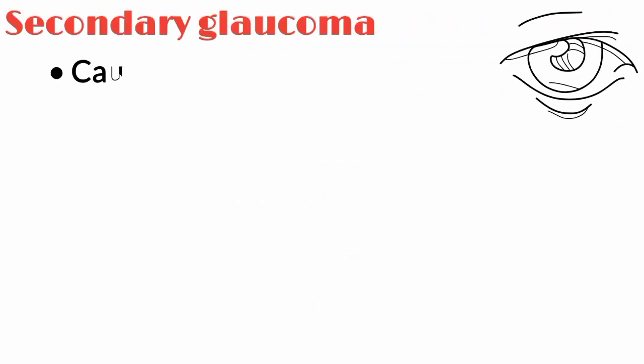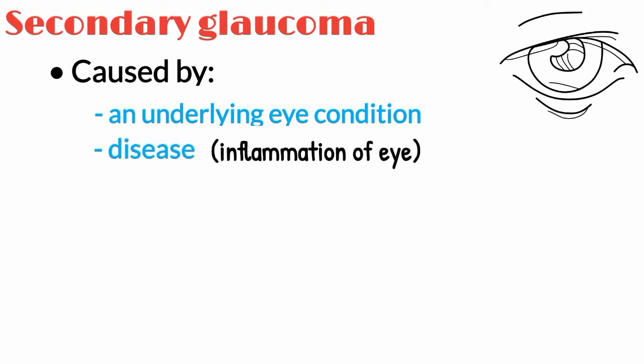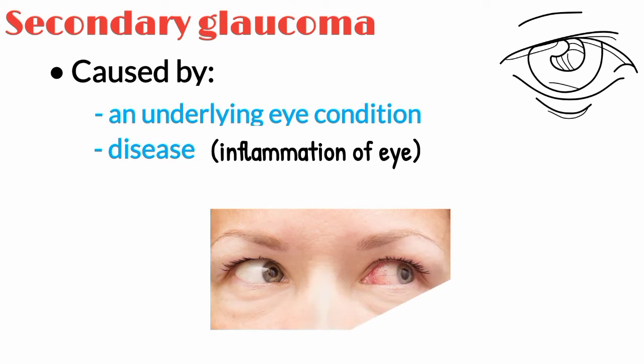Secondary glaucoma is mainly caused by an underlying eye condition or disease, such as inflammation of the eye, which is also known as uveitis.